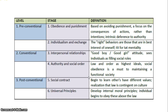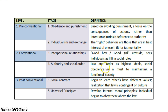We can now move on to Kohlberg's theory of moral development. In Kohlberg's theory there are three levels: the pre-conventional level, the conventional level, and the post-conventional level. In each level there are two stages. The stages are: stage one — obedience and punishment; stage two — individual exchange; stage three — interpersonal relationships; stage four — authority and social order; stage five — social contract; and stage six — universal principles. We will get into each stage one by one. You can pause the video at this point and look at the definitions on the slide, as I will elaborate on each one as we go further.